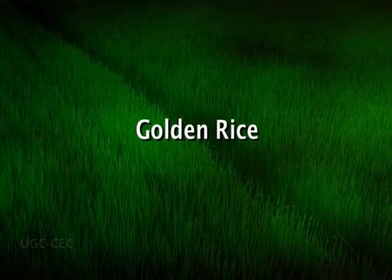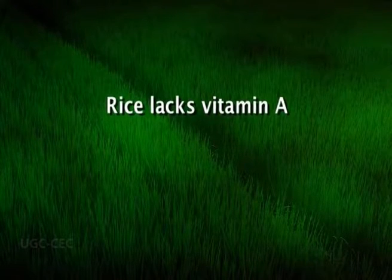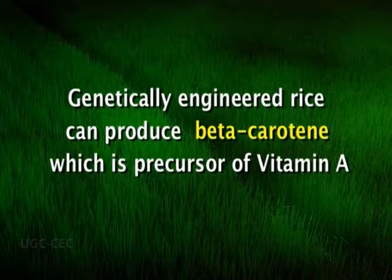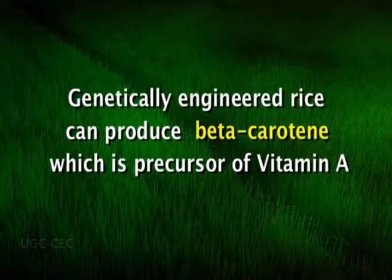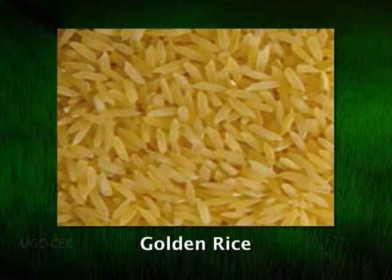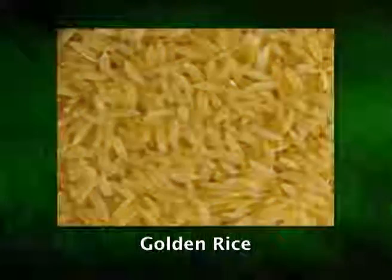Golden rice: rice kernels do not contain vitamin A, so people who obtain most of their calories from rice are at risk of vitamin A deficiency. To overcome this deficiency, researchers have genetically engineered rice to produce beta-carotene, the precursor of vitamin A, in the rice kernel. The beta-carotene turns the processed white rice a gold color, hence the name golden rice. The beta-carotene is converted to vitamin A in humans who consume it.